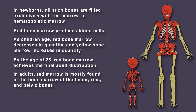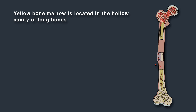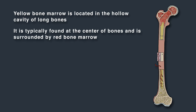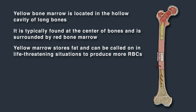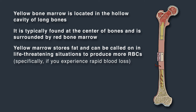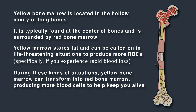In adults, red marrow is mostly found in the bone marrow of the femur, ribs, and pelvic bones. Yellow bone marrow is located in the hollow cavity of long bones and is typically found at the center of bones, surrounded by red bone marrow. Yellow marrow stores fat and can be called on in life-threatening situations — specifically rapid blood loss — to transform into red bone marrow and produce more blood cells to help keep you alive.